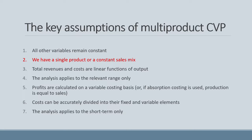The second assumption I want to highlight is that profits are calculated on the variable costing basis. Under variable costing, we don't allocate fixed costs to the individual products. Rather, we treat fixed costs as a period cost and expense them immediately. A common mistake among students is violating this assumption by trying to allocate fixed costs to individual products.